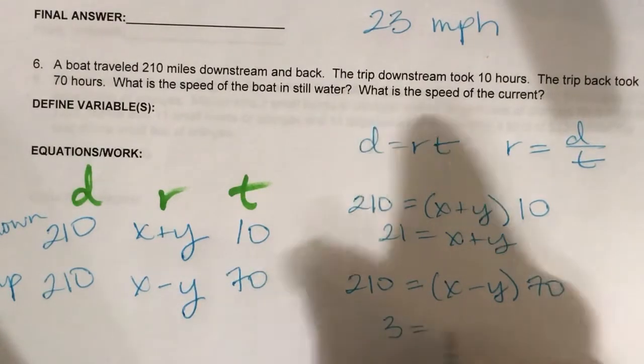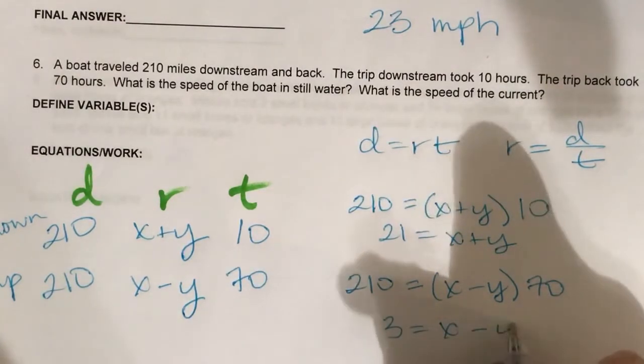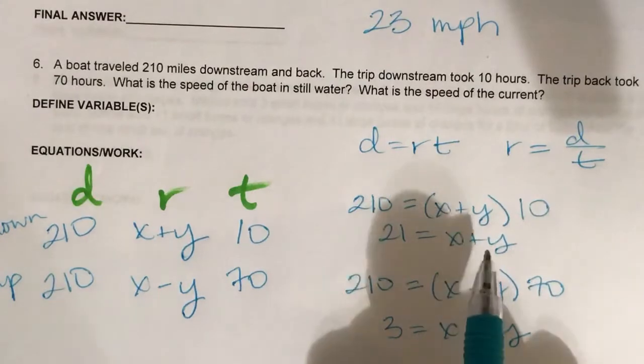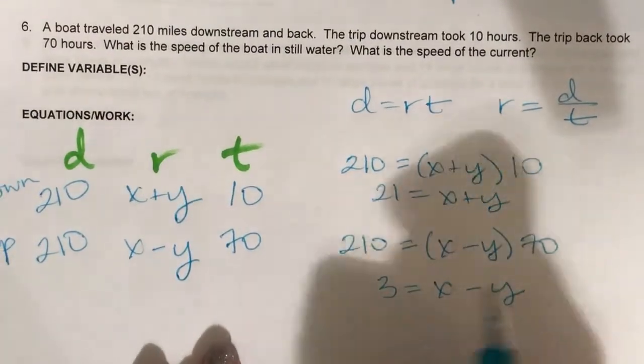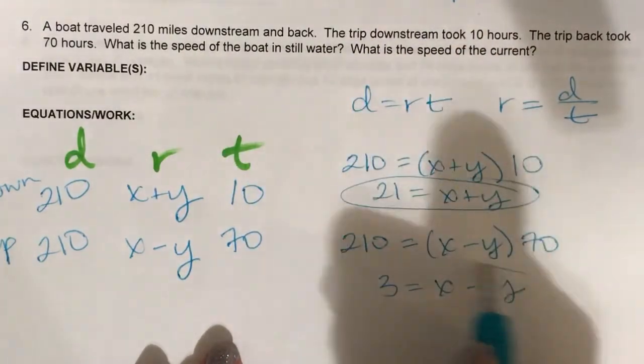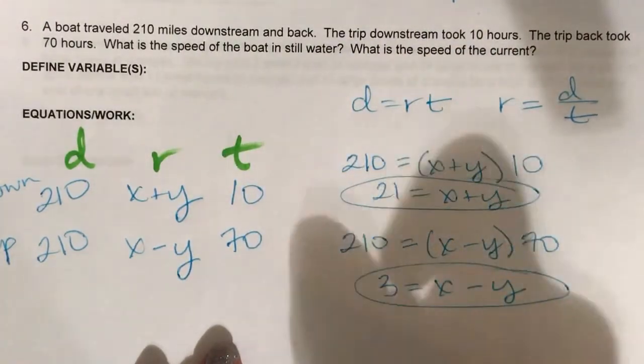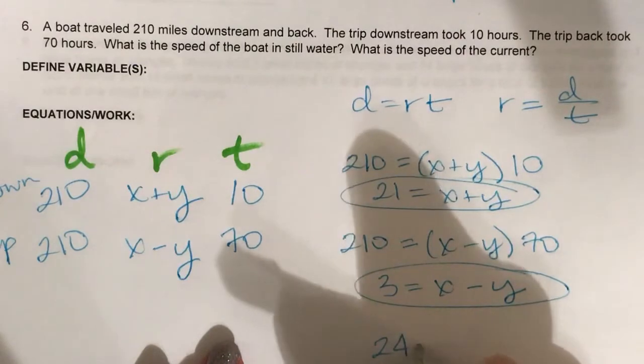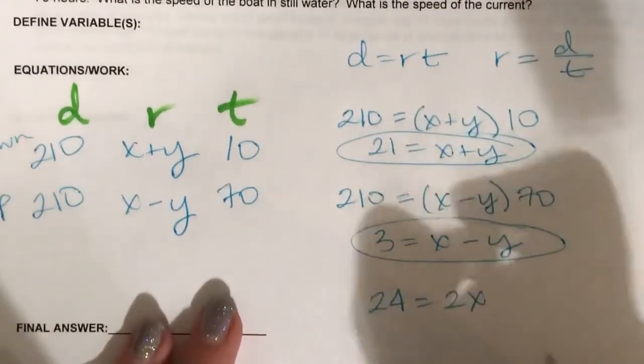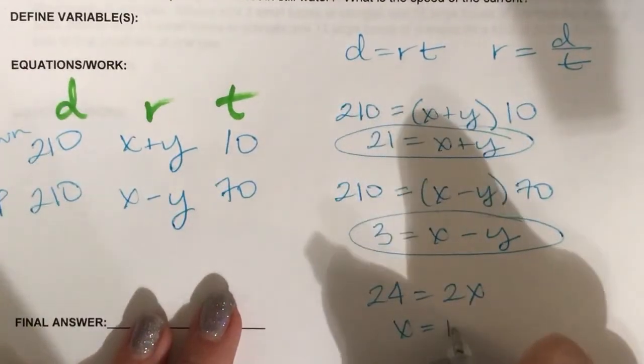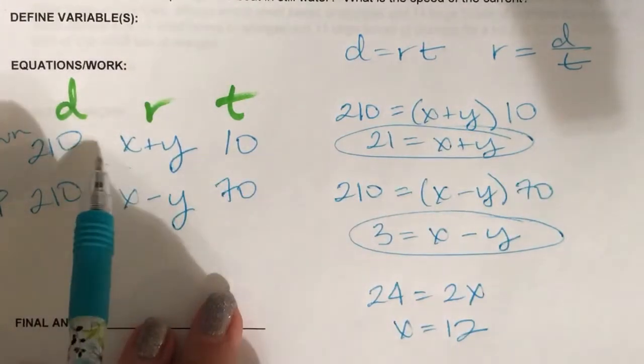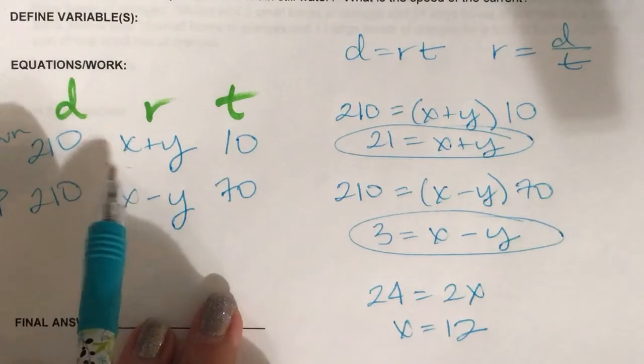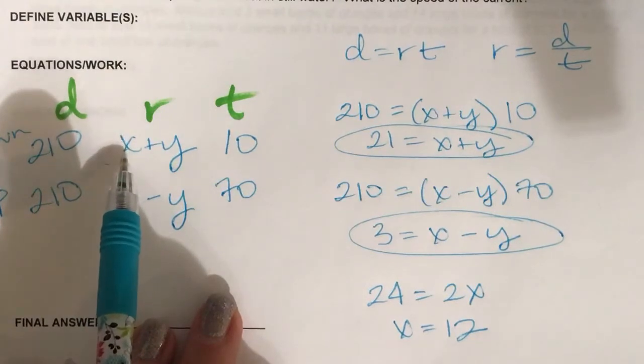These are the two equations that I'd want to solve, so I'm going to add these two equations together, which would give me this. So x would be 12, and x I had said was the speed of the boat in still water.